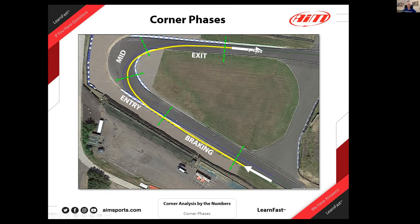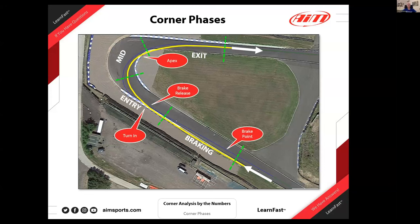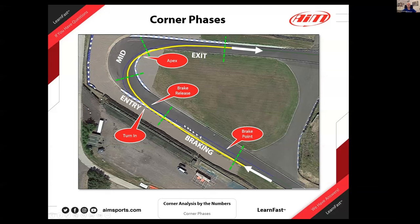You have a corner entry phase — the transition between braking and turning in. You have your mid-corner phase, which is more or less the rotation of the car around your apex. Then after the apex you have your exit, with the transition from turning to acceleration out of the corner. It's really simple, but important to highlight again because we're going to use that structure in the profile.